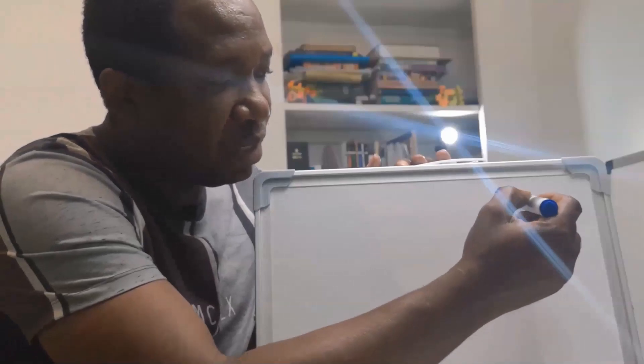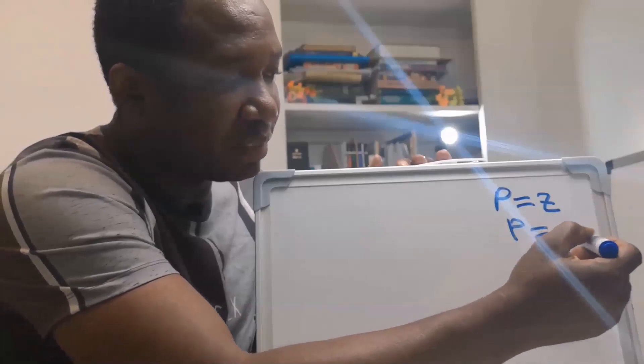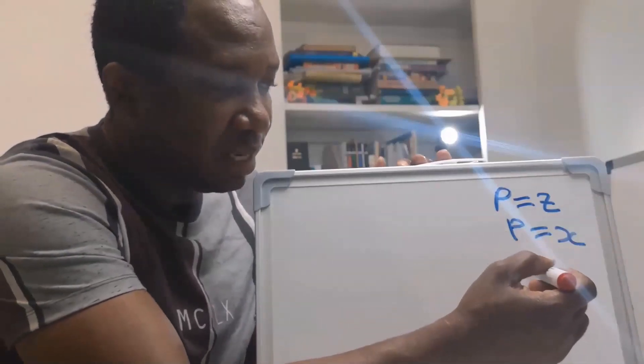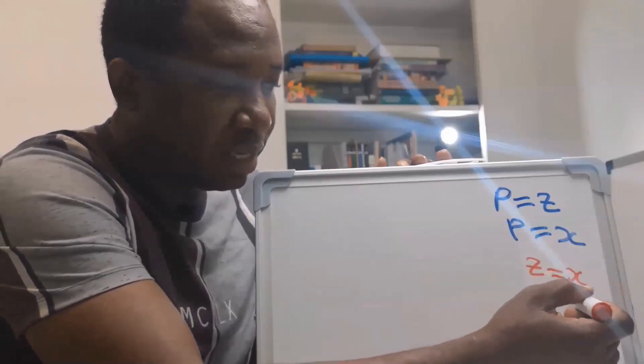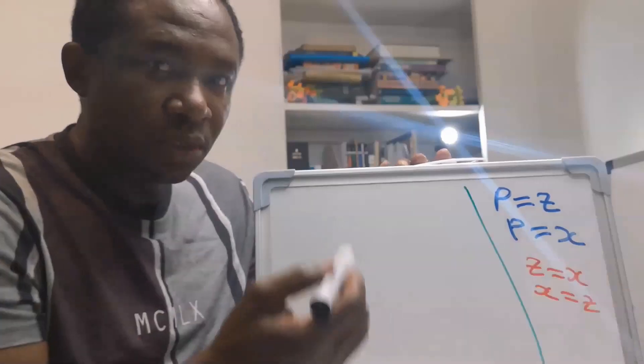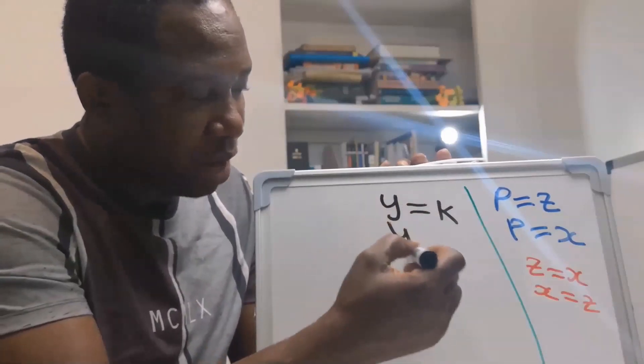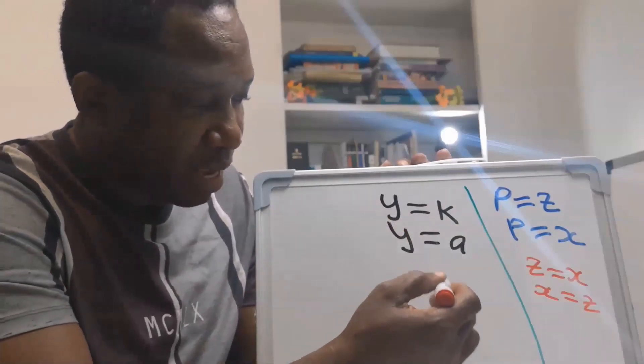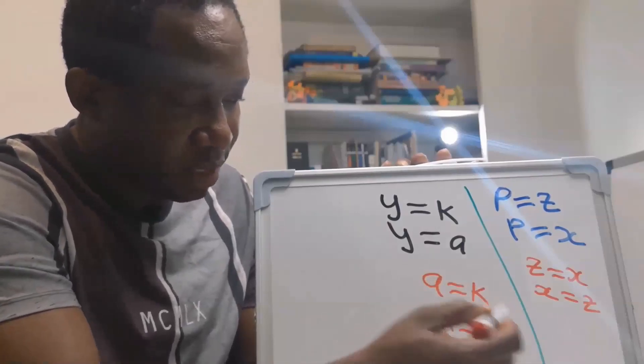For example, if P is Z and P is X, then it means that Z is X or X is Z. Also, if Y is K and Y is A, this shows that A is K or that K is A.